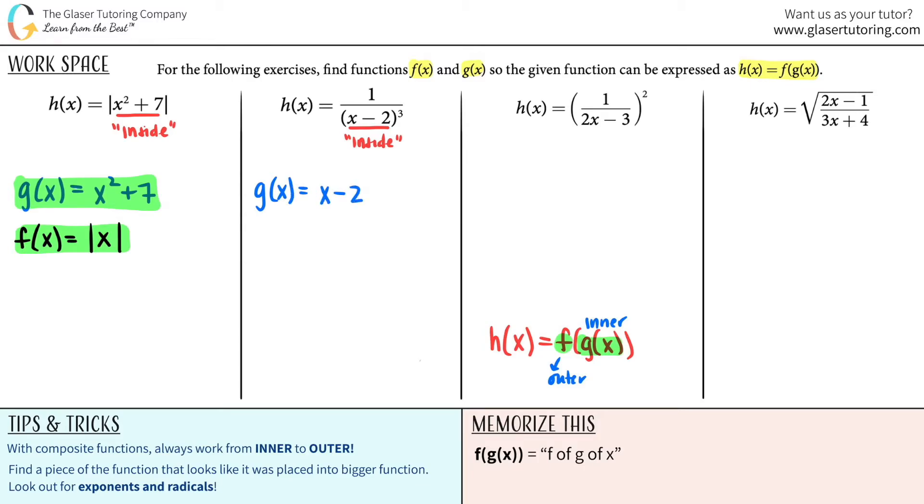G of x equals x minus 2. So now for your f of x, you write everything that was there and erase what you said was the inner function. So the inner function was x minus 2, so bye bye. And you just replace it with a x. And now all you got to do is just clean this up. So this would just be 1 divided by x cubed. And that's it. Those are your two functions.